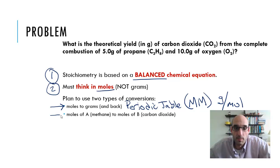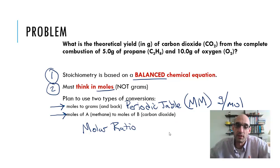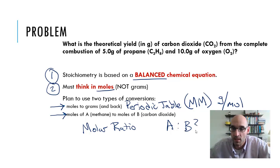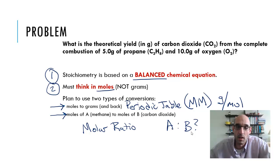Second, we are going to be using what we call a molar ratio. A molar ratio gives us the relationship between different chemicals in the same balanced chemical equation. So in this case, moles of A — it can be anything — but in this case it's going to be propane versus moles of B, carbon dioxide. How many moles of A versus how many moles of B? Are we going to produce, or are we going to need? The molar ratio gives the relationship between molecules within the same balanced chemical equation.